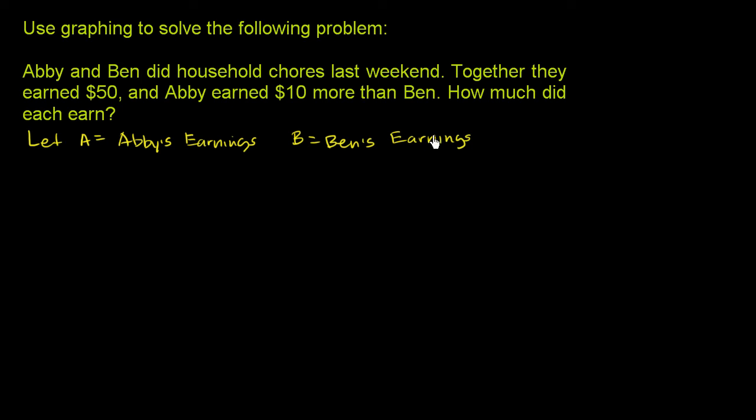Then they tell us how these earnings relate. They first tell us that together they earned $50. So that statement can be converted mathematically into, well, together means the sum of the two earnings. So A plus B needs to equal $50.